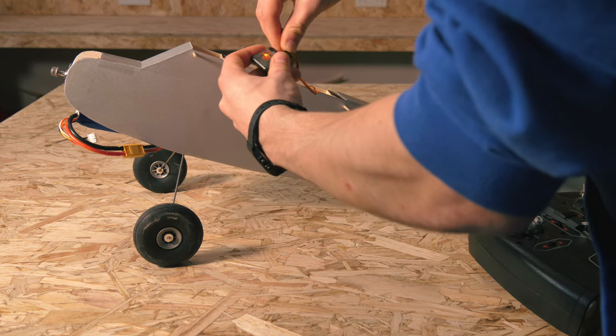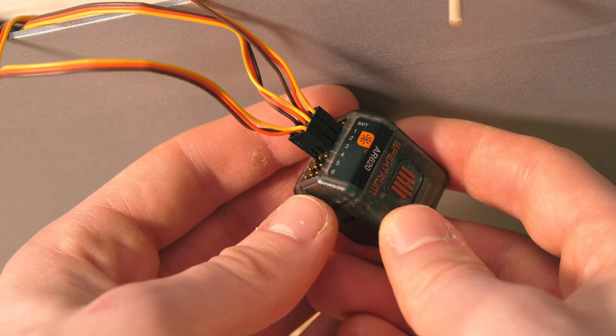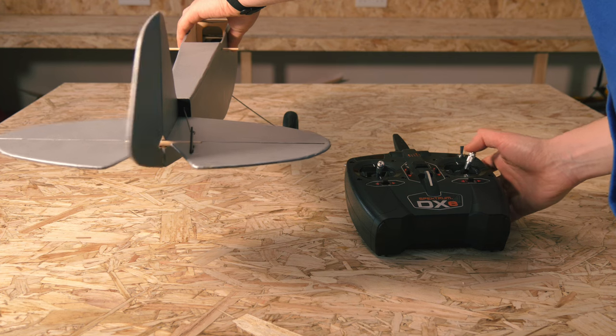You can now plug in servos and other things to the numbered channels on the receiver. Channels 2 and 3 on this curve are the rudder and elevator by default.